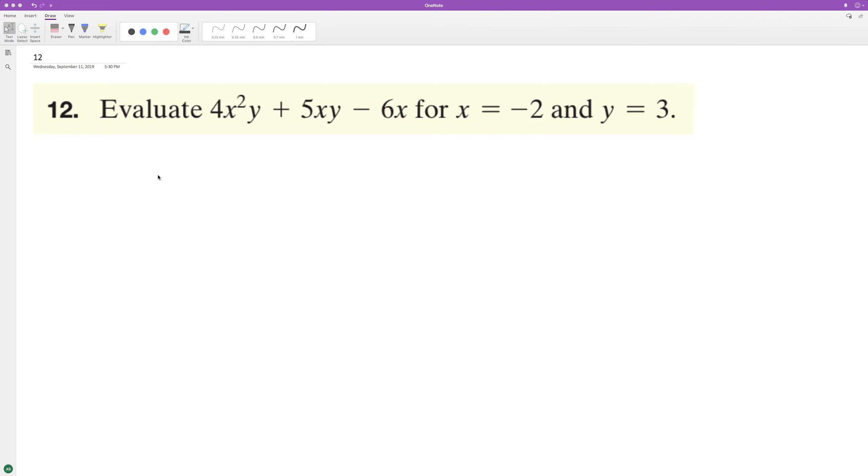We want to evaluate the following expression by substituting in x equals negative 2 and y equals 3. So to do that we'll have 4 times negative 2 squared, then for y times 3.